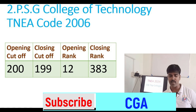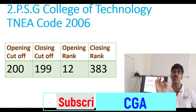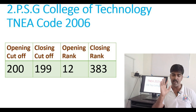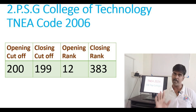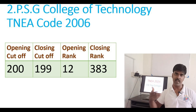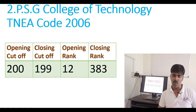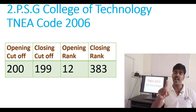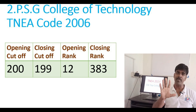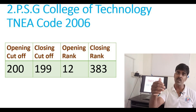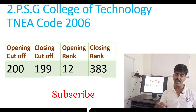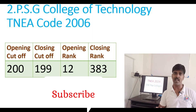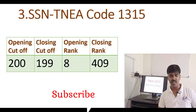Last year PSG College of Technology's closing rank was 383. For example, if you have a ranking of 390, you will be in the 10th ranking. If you have a cutoff of 199, it will vary. The third college is SSN, TNA code 1315 — opening cutoff 200, closing cutoff 199, opening rank 80, closing rank 49.